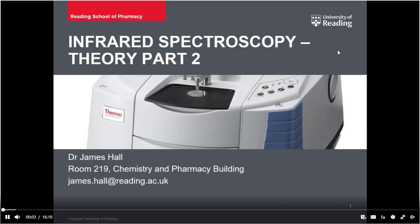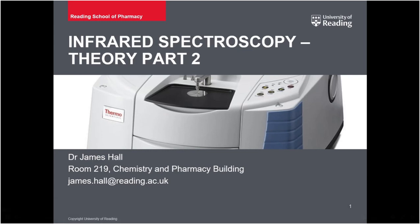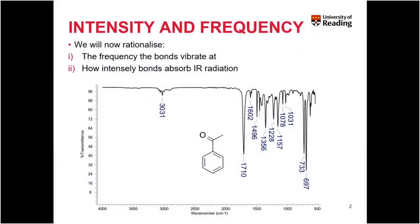We'll look at more advanced theory relating to infrared spectroscopy and seek to understand and rationalize why groups absorb in different positions and with different intensities. We'll focus first on understanding why different bonds absorb at different frequencies — for example, why carbon-hydrogen bonds absorb at around 3,000 wavenumbers, whereas carbon-oxygen double bonds absorb at around 1,700 wavenumbers. After this, we'll look at why different functional groups give different intensities in the infrared spectrum.